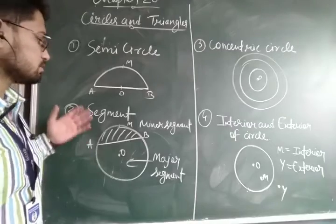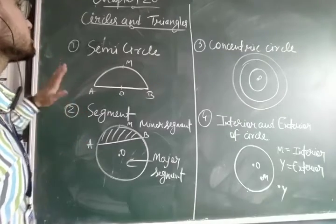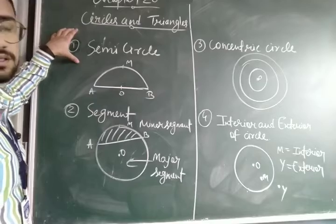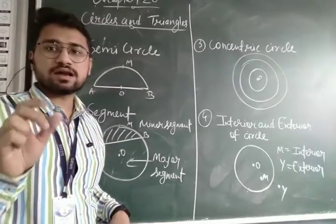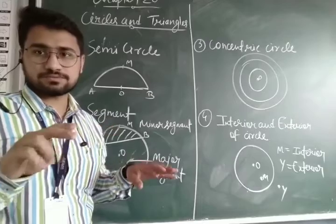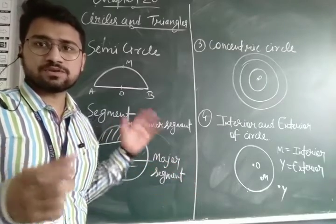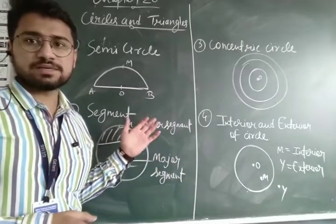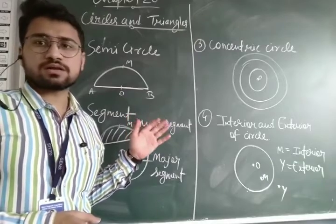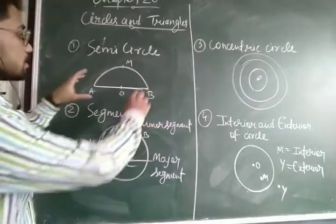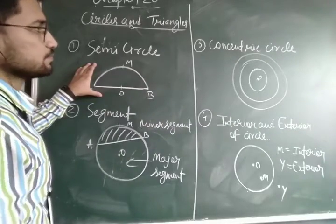Now we will see different types of circles, such as semi-circle. Just like there is one circular biscuit and you ate it half — the remaining portion of that biscuit will be the semi-circle. So the half part of the circle is known as a semi-circle.